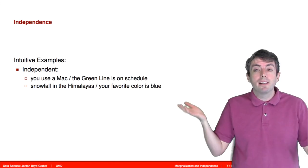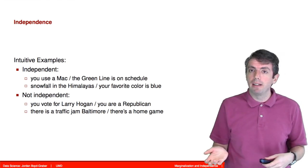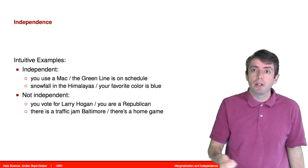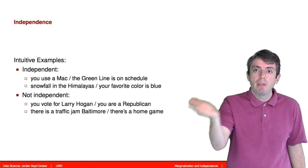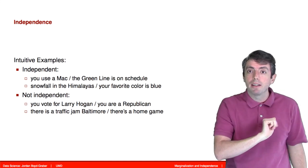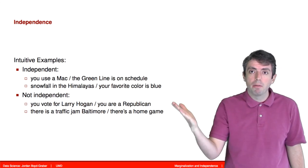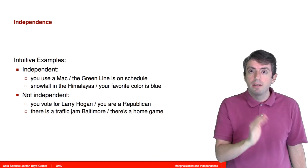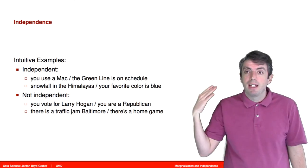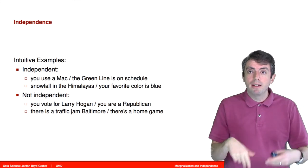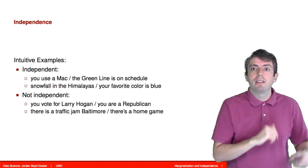There are other things that are very clearly not independent, and it would be foolish to model them as independent. So let's say that I'm trying to predict how you're going to vote, and I'm going to ask your party affiliation, and then I'm going to ask you whom are you going to vote for in the next election. If you tell me you're a Republican, you're more likely to vote for a Republican candidate. Similarly, if there's traffic on Route 1, it's not independent of whether there is a home game being played at the University of Maryland.